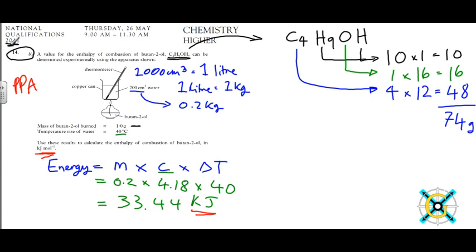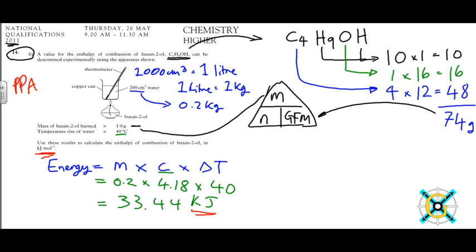So now we're using our mole triangle which we all know by heart. To work out the moles, we're going to do mass divided by GFM, which is 1.0 divided by 74, which is equal to 0.0135 moles.